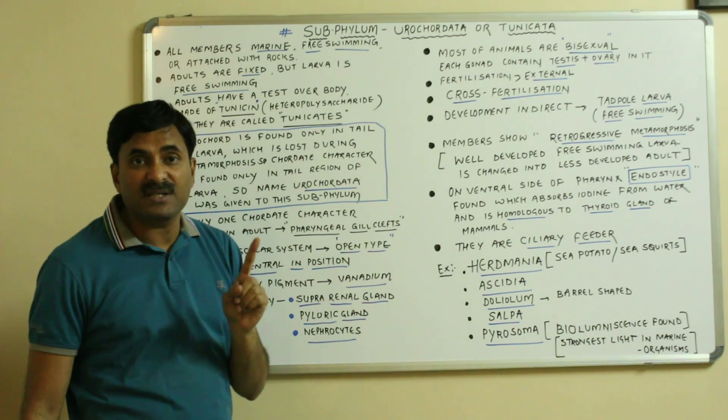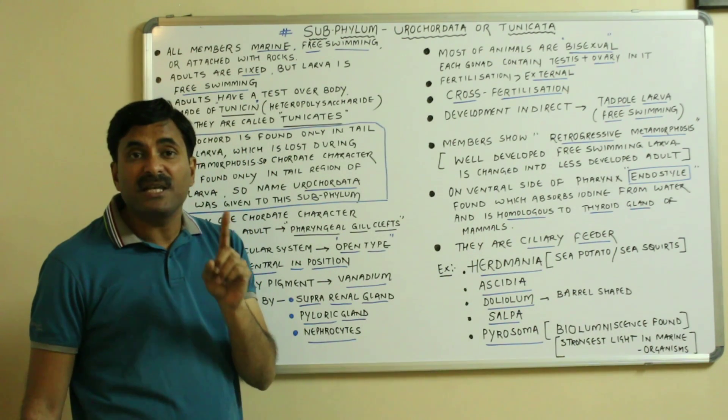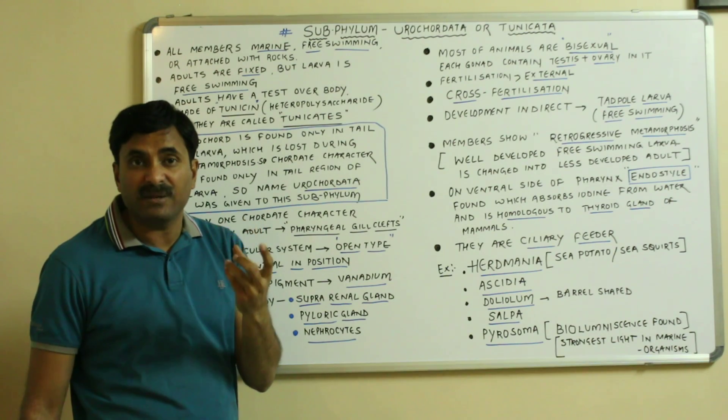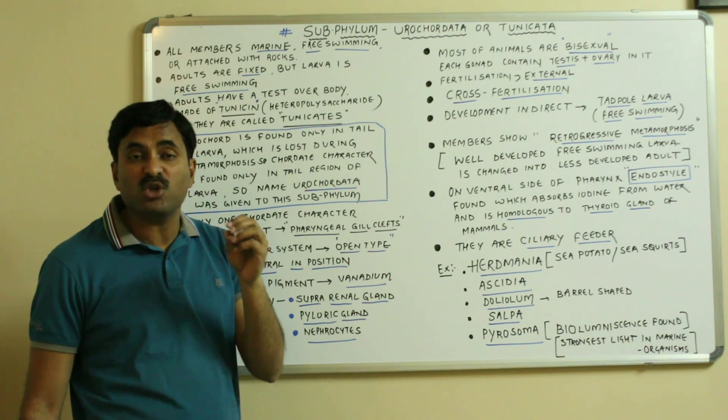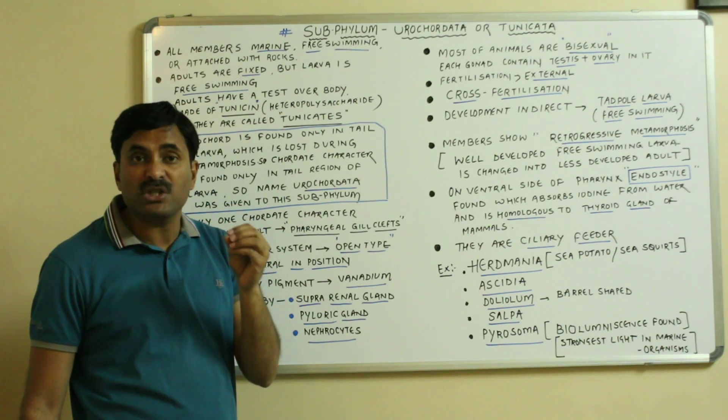They are ciliary feeders. What is a ciliary feeder? Ciliary feeder means it is a mode of feeding in which the cilia shows movement because of which they generate water currents.